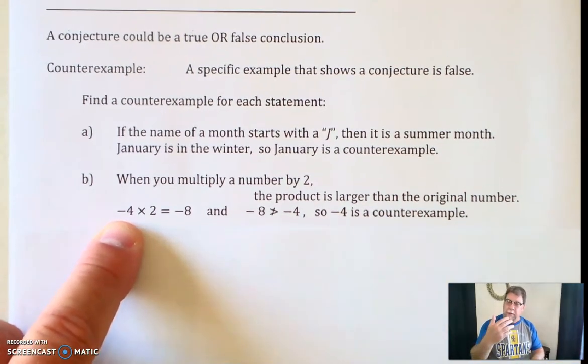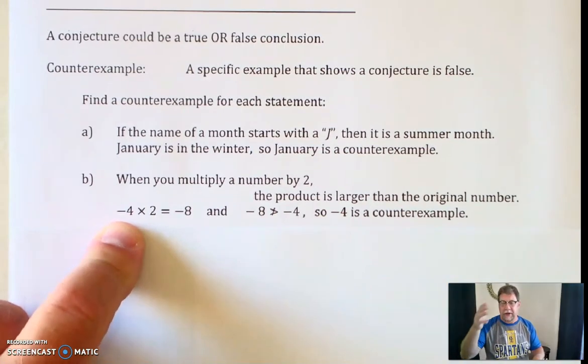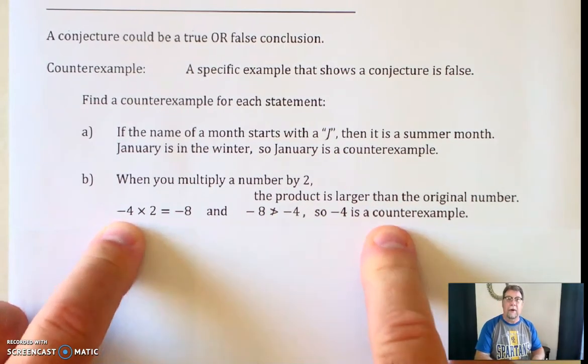So, sometimes you've got to dig a little bit deeper into your brain and say, okay, there's got to be a twist here somewhere. So, the negative number would be that twist.